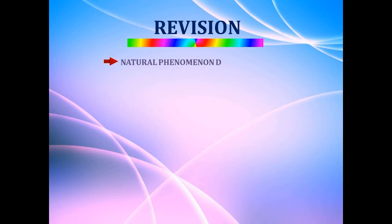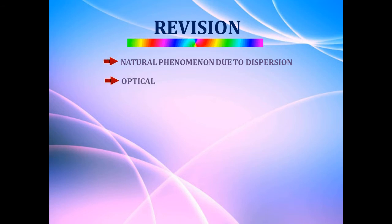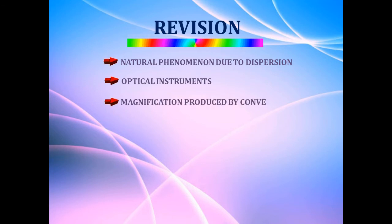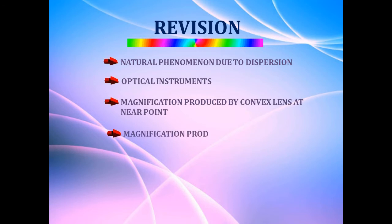In the previous class, we discussed about the natural phenomena caused due to dispersion — the formation of rainbow, the blue color of the sky during noon, and the red color of the sky during sunset and sunrise. We also discussed about optical instruments, specifically the simple microscope — the magnifying lens or convex lens — and the magnification produced by a convex lens at near point as well as the far point.